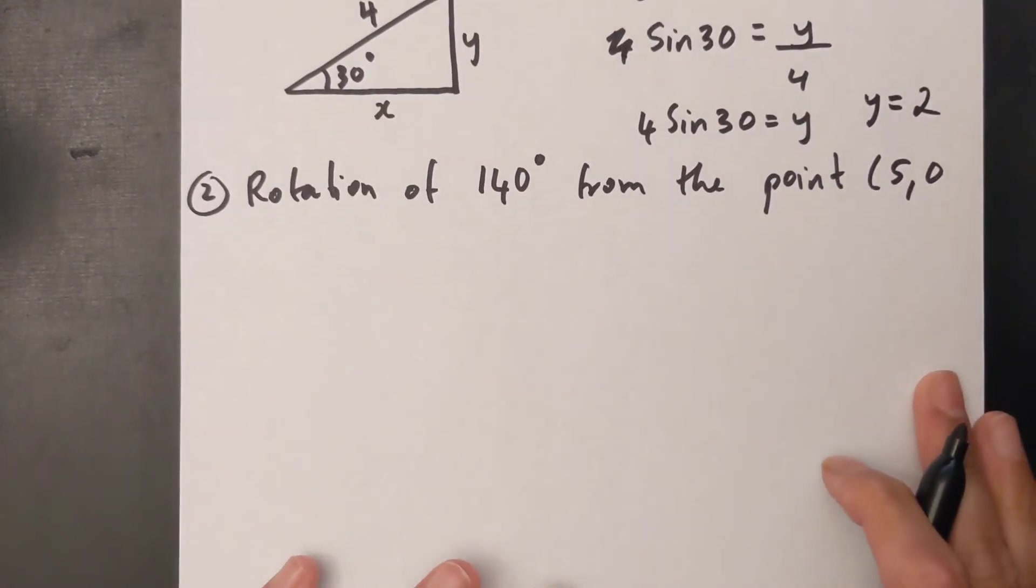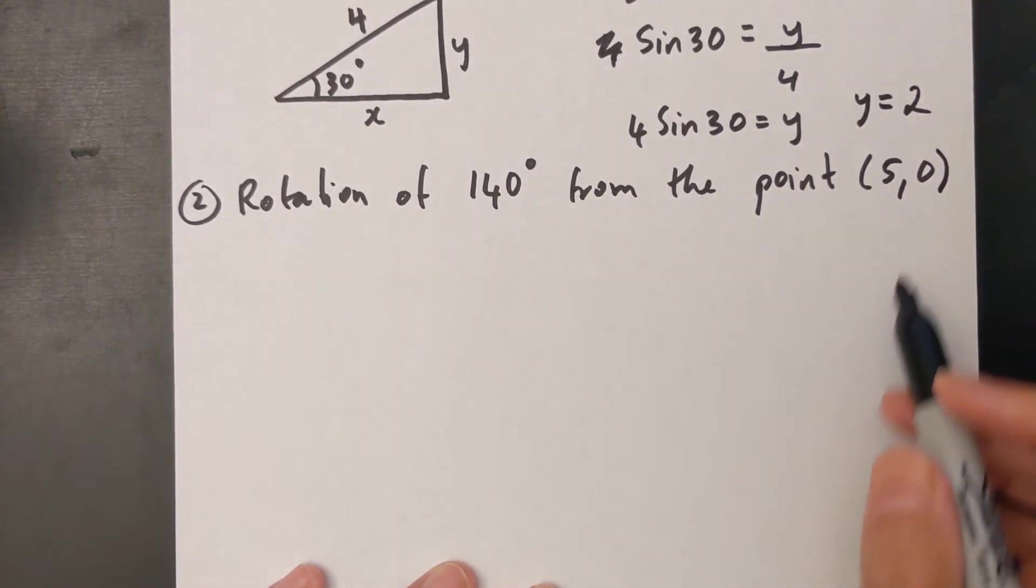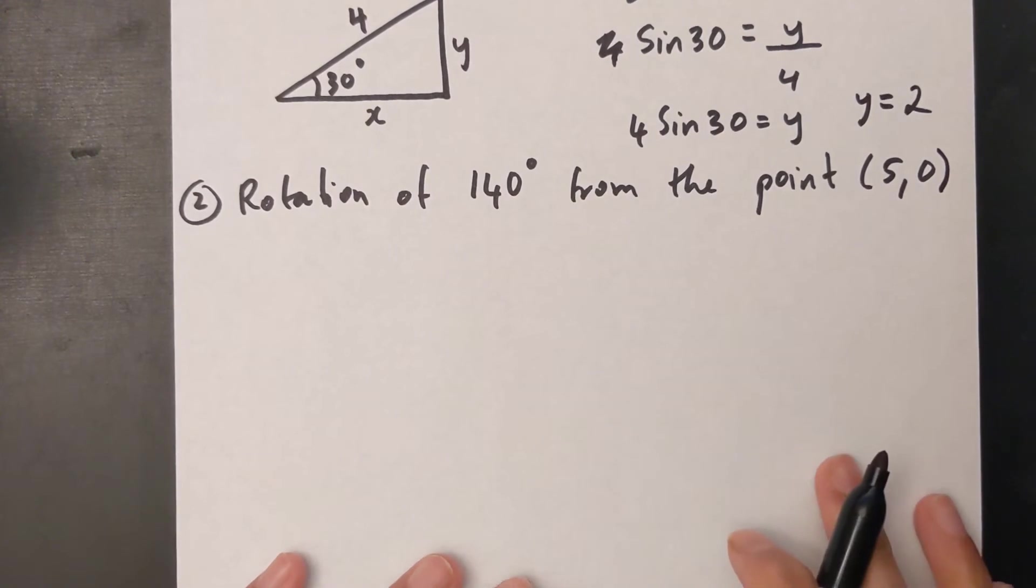Let's take another look at a problem that's going to be in a different quadrant now. So this one is a rotation of 140 degrees from the point (5,0).